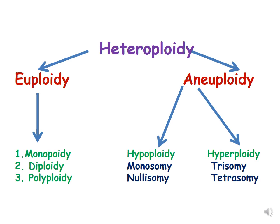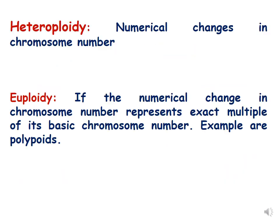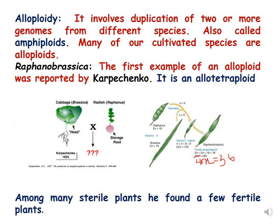In euploidy, many polyploids come under this category. Polyploids are those organisms which have more than two sets of chromosomes. We have already discussed that there are various types of polyploidy, which are categorized as autoploids, alloploids, autoalloploids, and segmental polyploids.